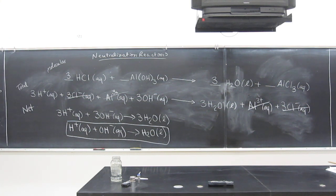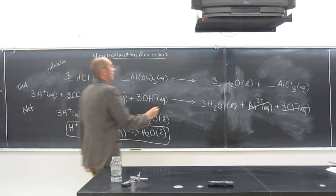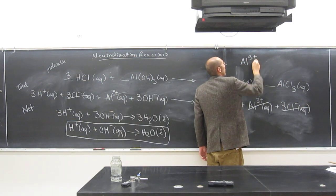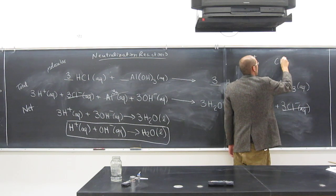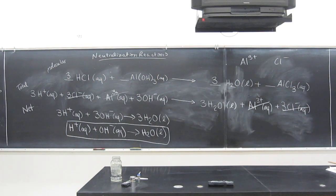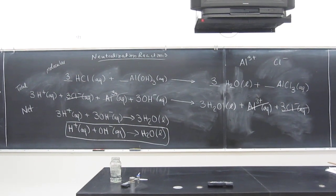What are the spectator ions? I guess we should write that too. Al 3+ and Cl minus, spectator ions. Any questions? Okay, good. Neutralization reaction.